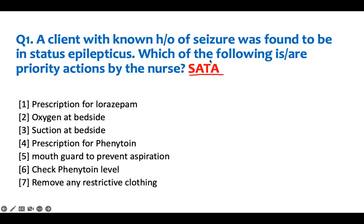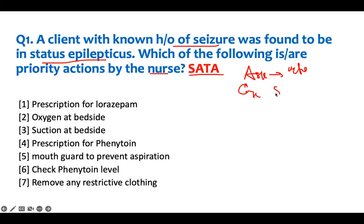Which of the following are priority actions by the nurse? So we go with the 'asked' — the asked question is: what actions are you going to take? And then we go with the case. What kind of case do we have? A client with a known issue of seizure was found to be in status epilepticus. Which of the following is our priority action to take as a nurse? The case is somebody with a seizure who is in status epilepticus.